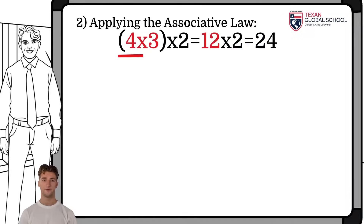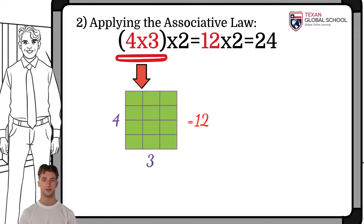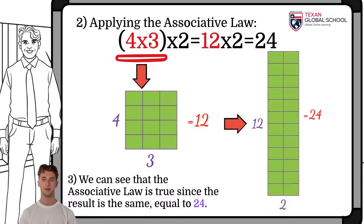Finally, we group four by three, and to that result we multiply two, obtaining the same result of 24 units. As you can see, we can group and multiply the numbers as appropriate. In the end, the result will be the same. Hence, we conclude that the order of the factors does not alter the product.